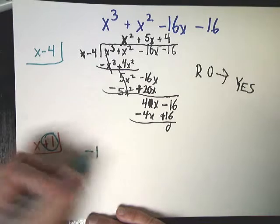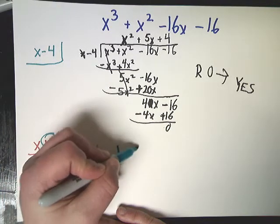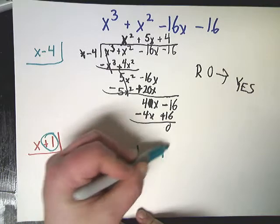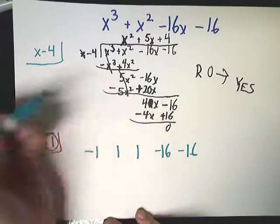Remember, change the sign on this one. Then you write all the coefficients down. 1, 1, negative 16, negative 16. There aren't any missing. That's good.